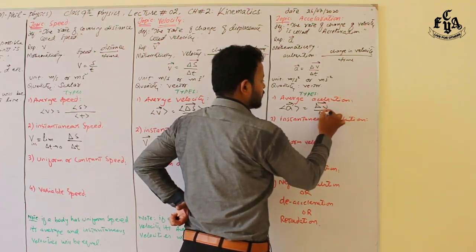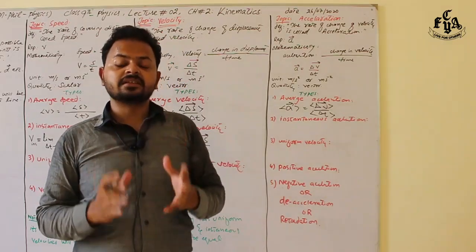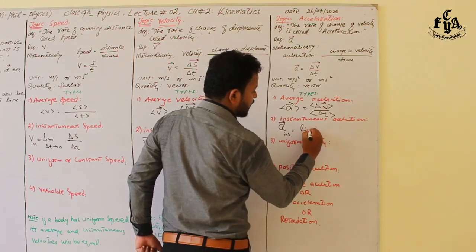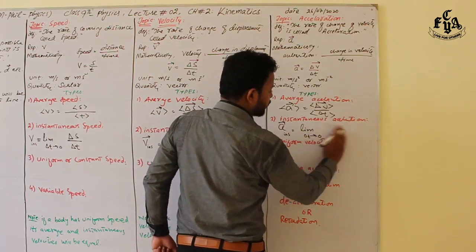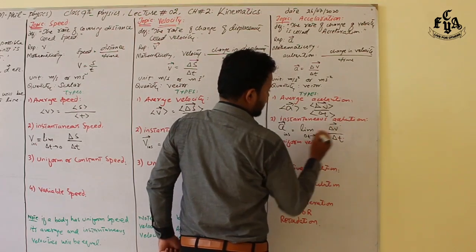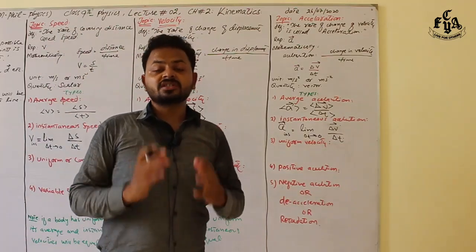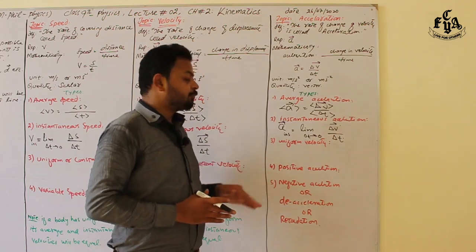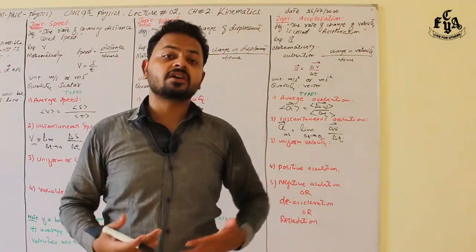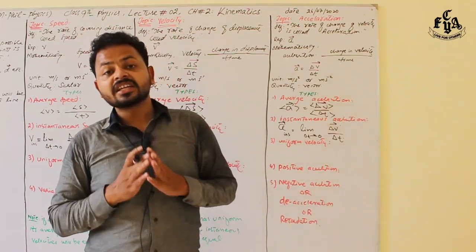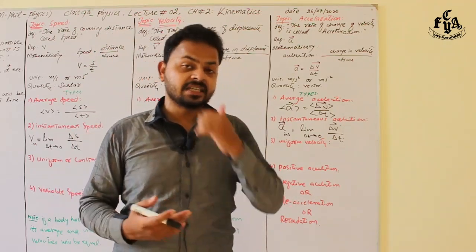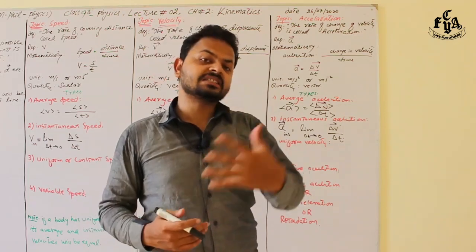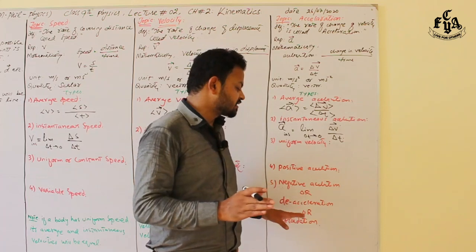Instantaneous acceleration is the acceleration of a body in a very short period of time: a_instantaneous = limit Δt→0 of Δv⃗/Δt. Uniform or constant acceleration means equal change in velocity occurs in equal intervals of time. Positive acceleration means the magnitude of velocity increases with time. Negative acceleration — also called deceleration or retardation — means the magnitude of velocity decreases with time, such as when a car applies its brakes.